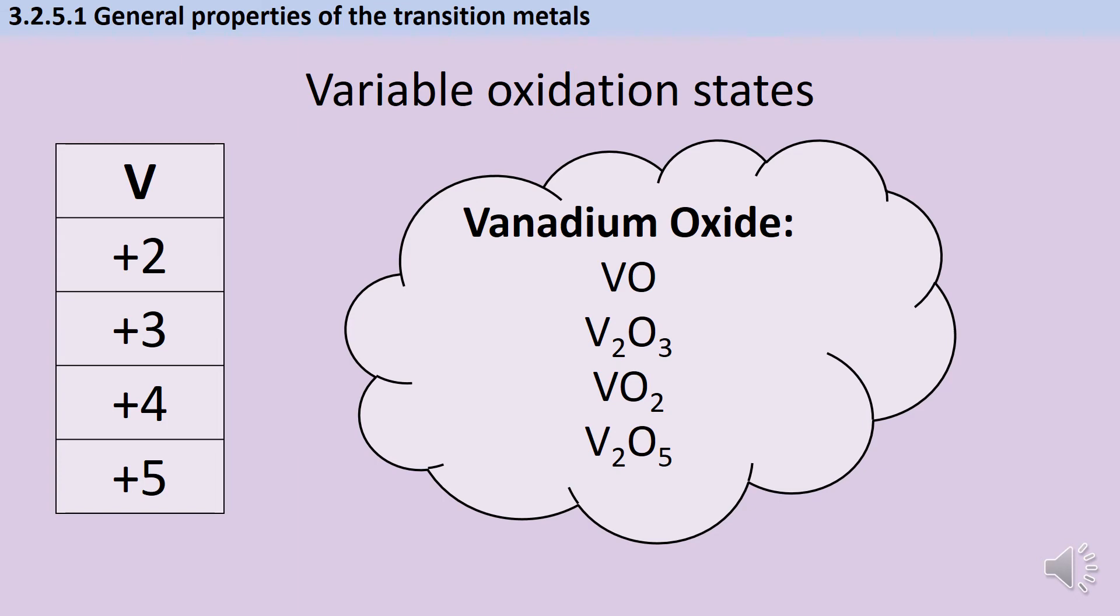If the vanadium has an oxidation state of +3, we get vanadium sesquioxide, which is V2O3. If the vanadium has an oxidation state of +4, it will make vanadium dioxide, which is VO2. And finally, if the vanadium has an oxidation state of +5, we get vanadium pentoxide, so V2O5.